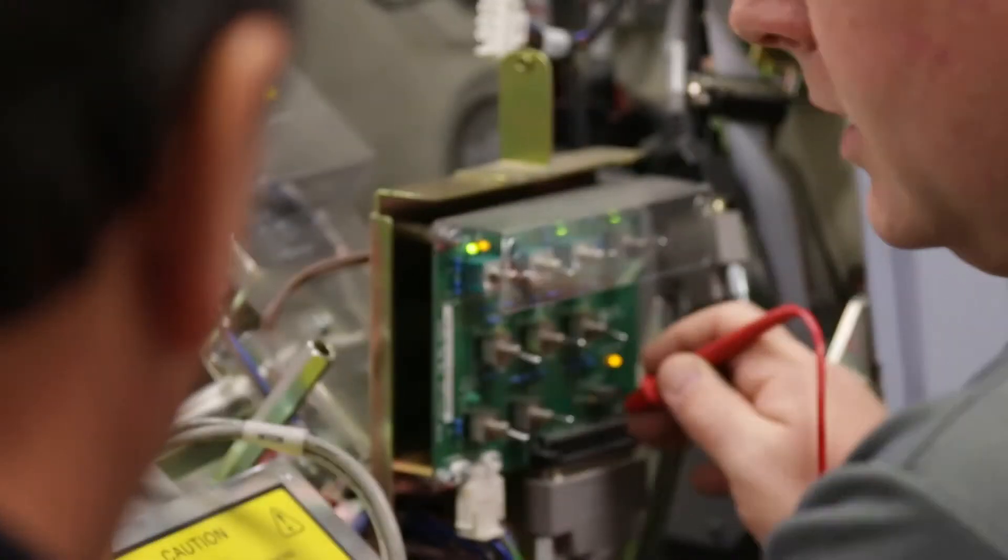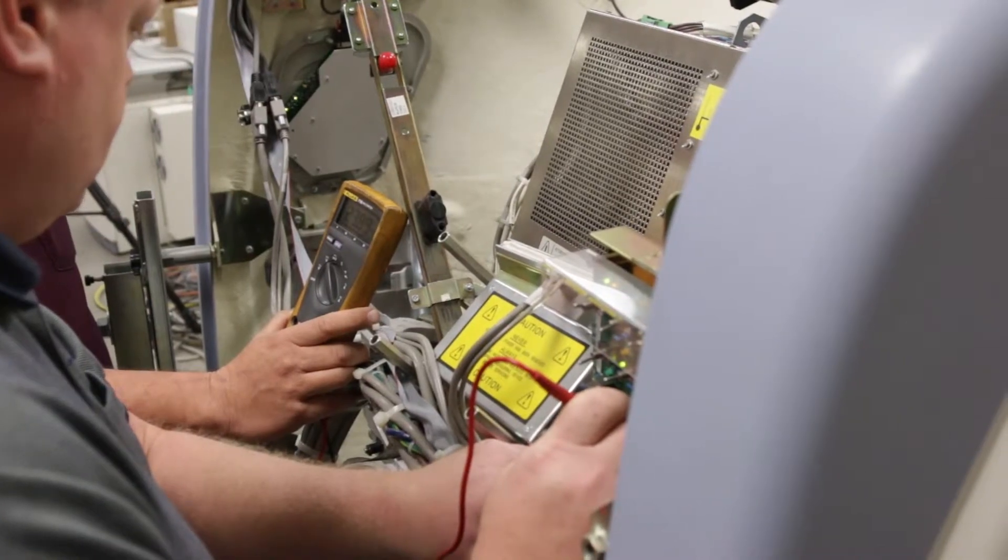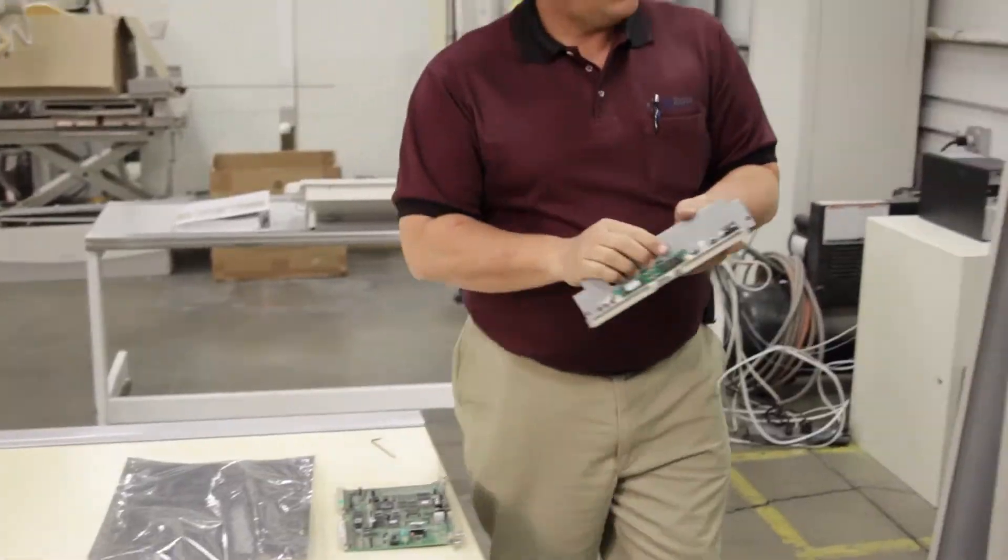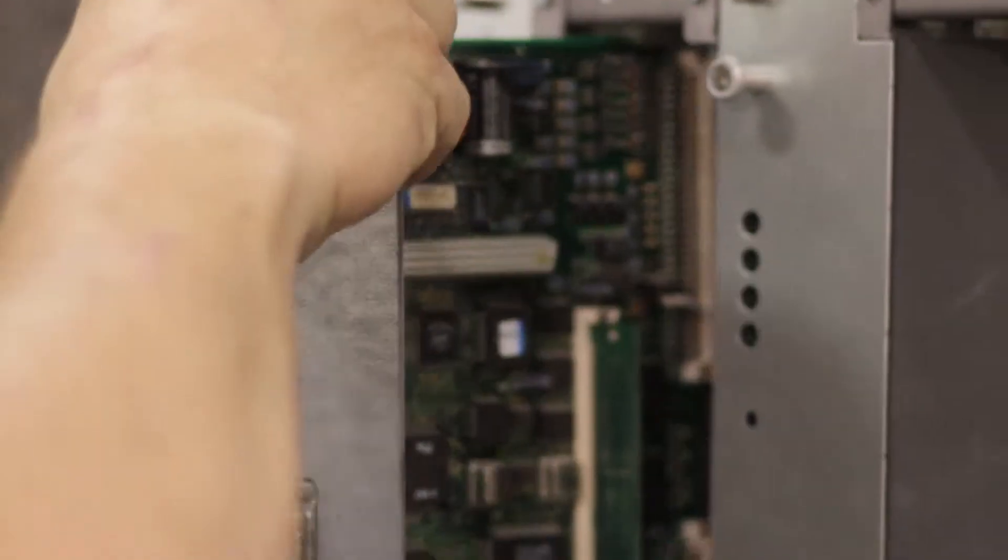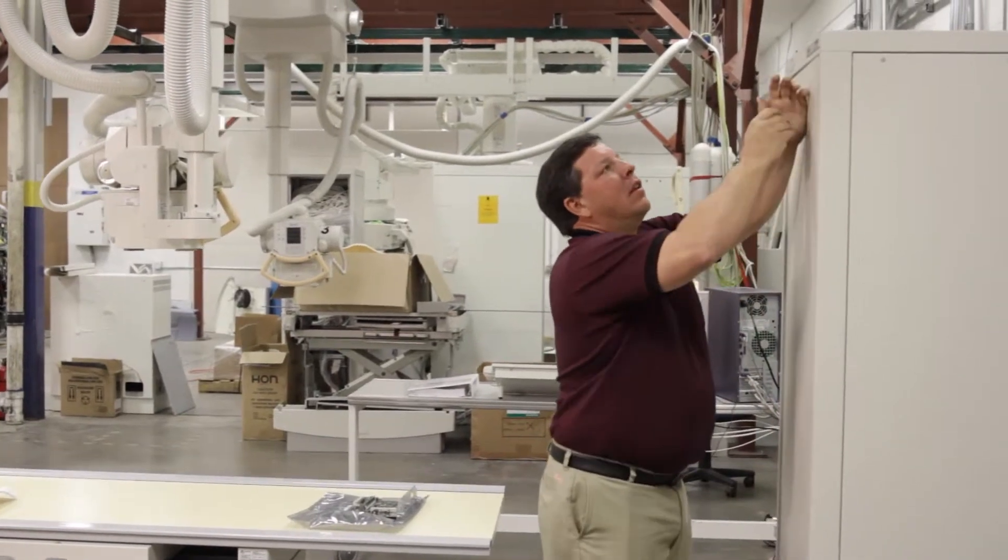While the systems are disassembled for paint, we check systems for functionality. Systems checks are run and components that don't meet or exceed factory specifications are replaced. Once the systems meet specifications, the refurbished covers are reinstalled and the system is again tested for functionality.